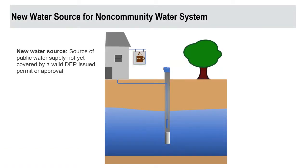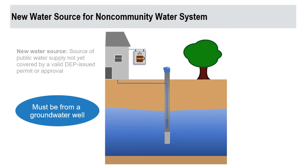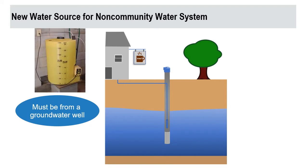A new water source is a source of public water supply that is not covered by a valid DEP-issued permit or approval. A new water source for a non-community public water system must be from a groundwater well. Dug wells, horizontal wells, springs, and surface water are not acceptable sources of water for the non-community water system application.